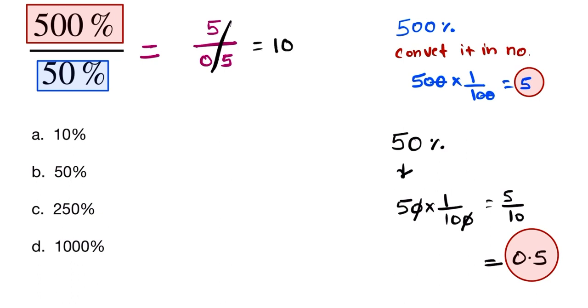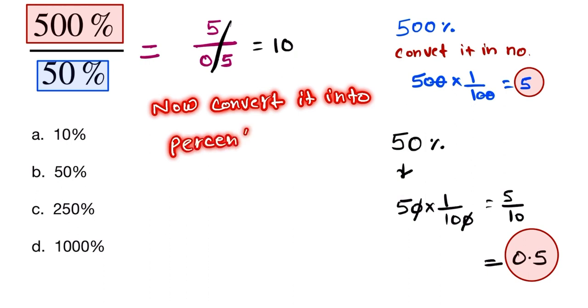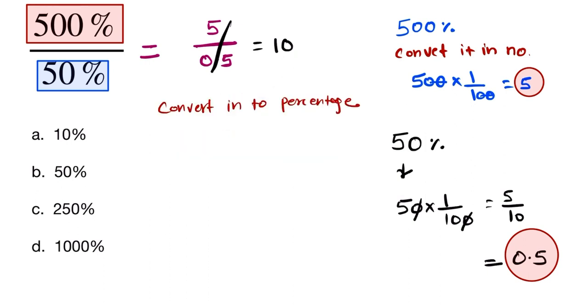Now we convert 10 into percentage. So when we convert into percentage, we multiply by 100. So here we multiply 10 into 100, and this one is equal to 1000.